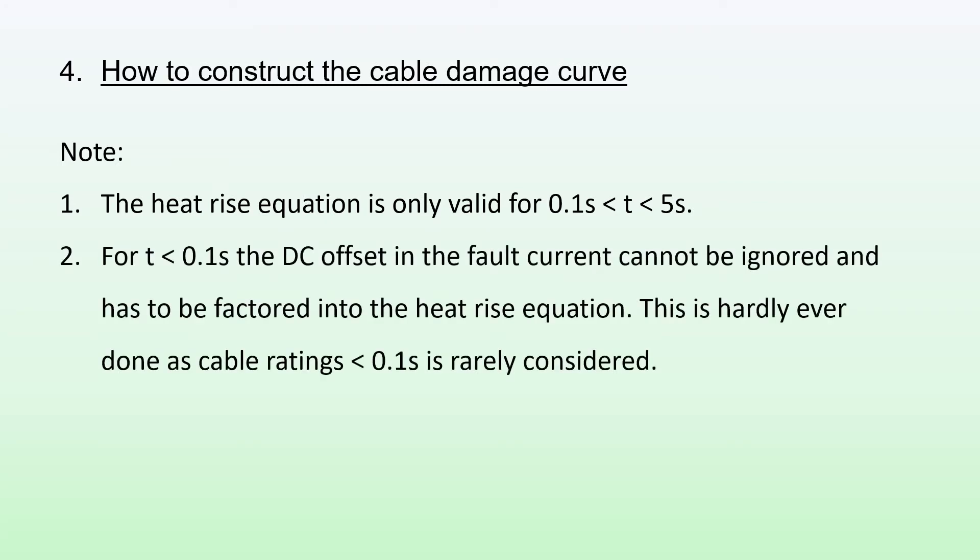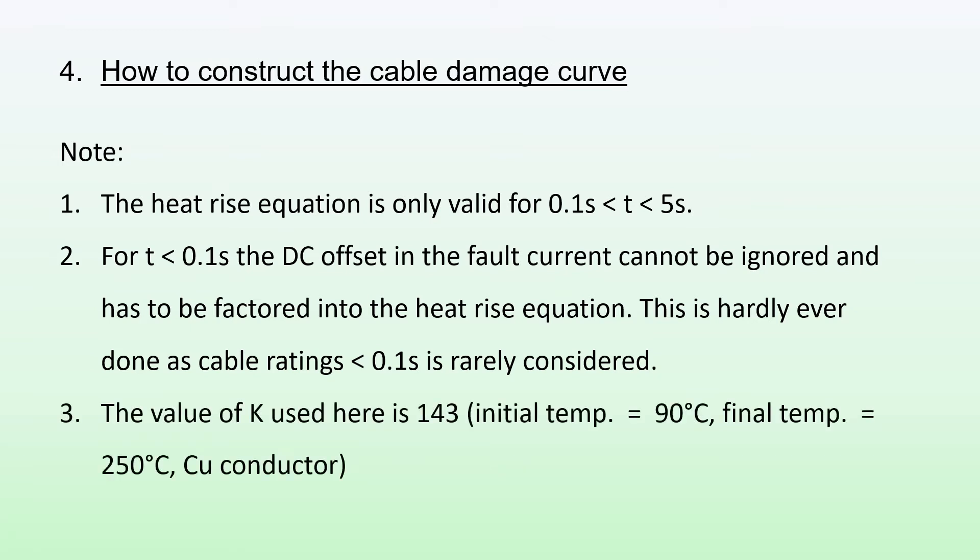Please note the following: this heat rise equation is only valid for the time period from 0.1 second to 5 seconds. For times less than 0.1 second, the DC offset in the fault current cannot be ignored and has to be factored into the heat rise equation, however this is hardly ever done as cable ratings less than 0.1 second is rarely considered. The value of K used here is 143, based on initial temperature of 90 degrees, a final temperature of 250 degrees, and a copper conductor.